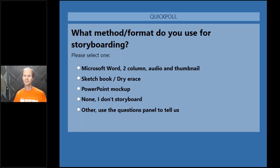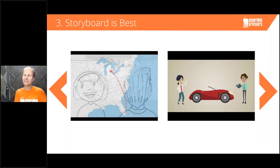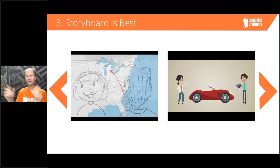Looking at the poll results: 36% of the audience uses PowerPoint mock-ups, 32% use Microsoft Word or a two-column audio and thumbnail setup, 18% don't storyboard, 10% use a sketchbook or dry erase board, and 4% responded via the questions panel. That comes back to about what I expected. The most common I've seen working with clients has been the Microsoft Word two-column format — a thumbnail on the left and narration on the right.